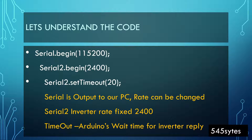Next is Serial.begin — this is the baud rate for communication with your PC, and this rate can be changed to whatever you want. Serial2 is the rate we are going to communicate with the inverter, and this has to be 2400 — I've already discussed this. Then there is the serial setup timeout: this is the Arduino's wait time for an inverter reply. Once the command is sent, the inverter has to reply. 20 milliseconds is set here, and even at 2400 baud rate, 20 milliseconds is good enough. If you don't get any reply within 20 milliseconds, it means there is no communication taking place.